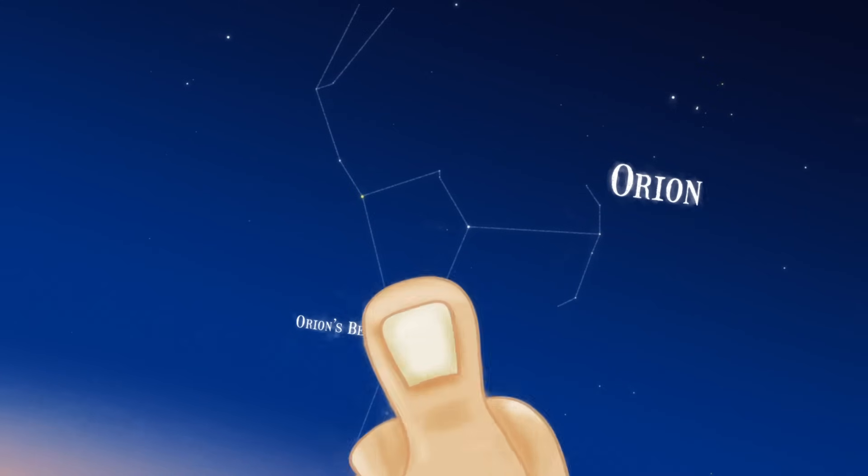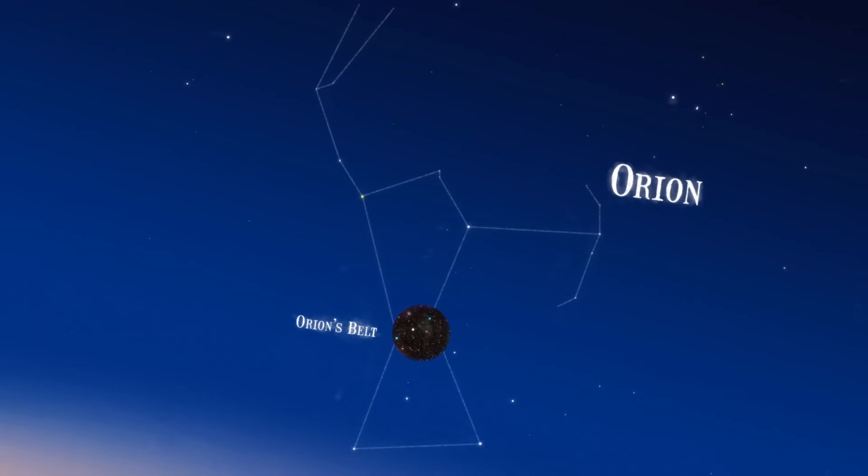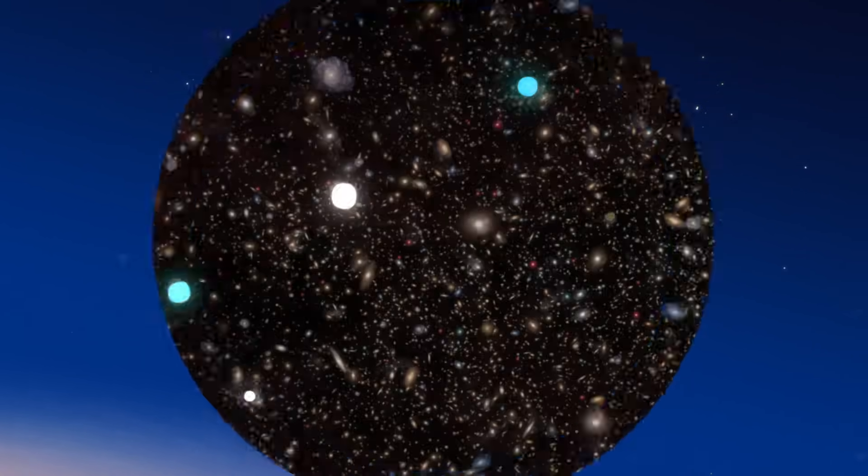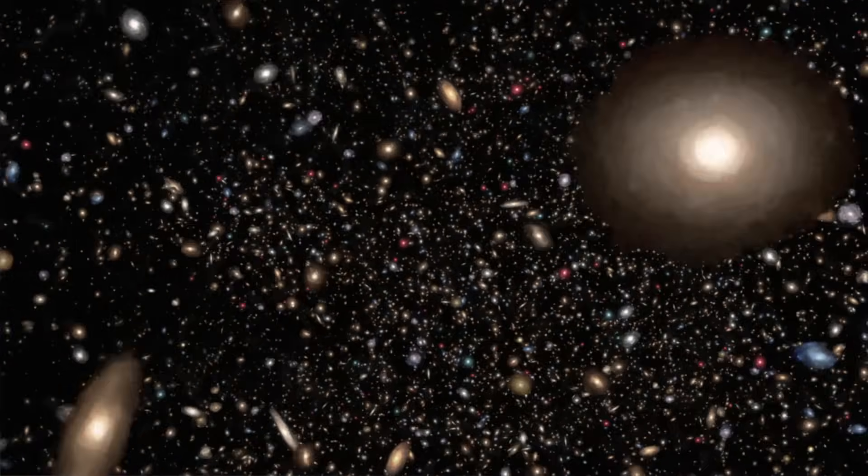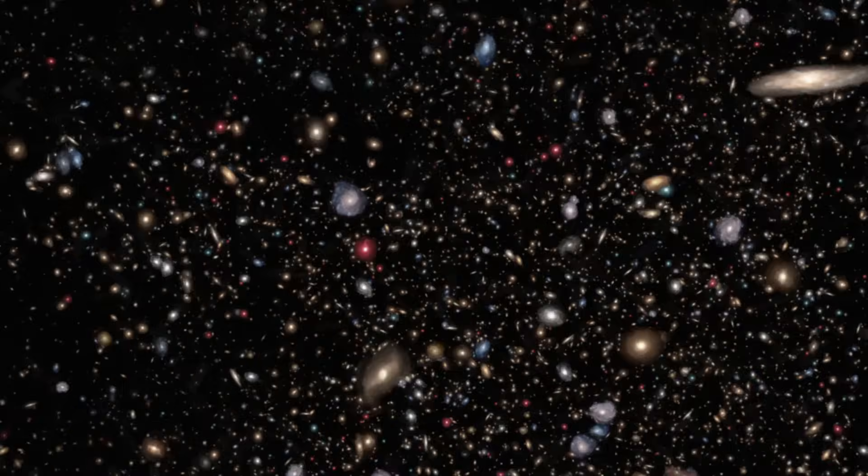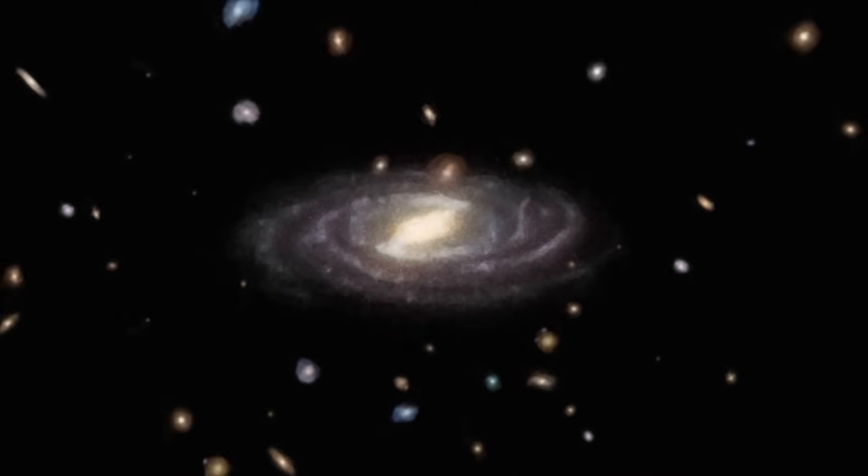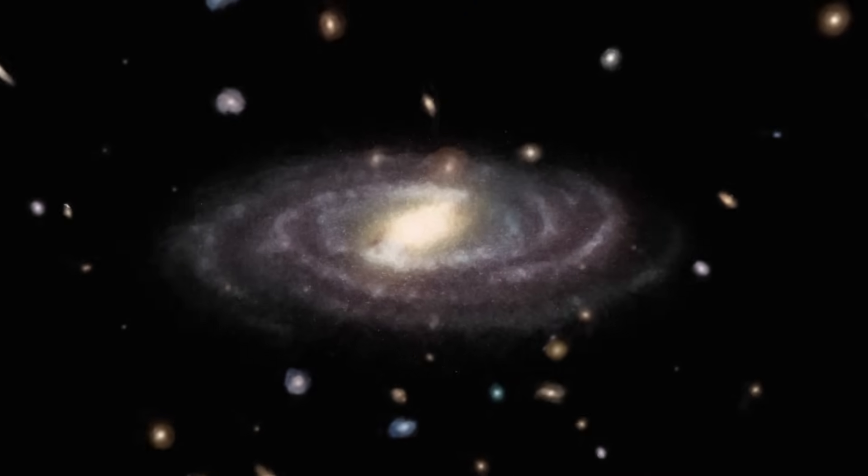If you looked at that thumbnail-sized patch of sky with the Hubble Space Telescope, instead of points of light, you'd see smudges. These aren't stars. They're galaxies, just like our Milky Way, cities of billions of stars.